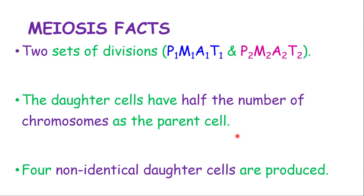Some key facts about meiosis: there are two sets of divisions, referred to as PMAT 1 and PMAT 2. The daughter cells will have half the number of chromosomes as the parent cell. There will be four non-identical daughter cells produced from this division.